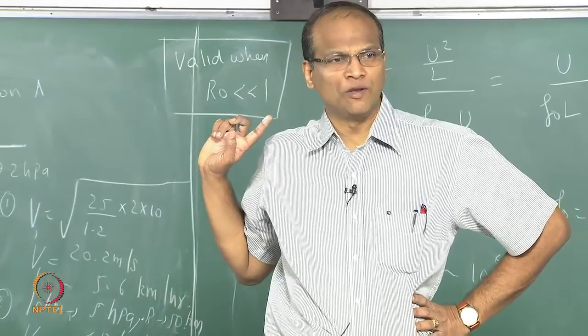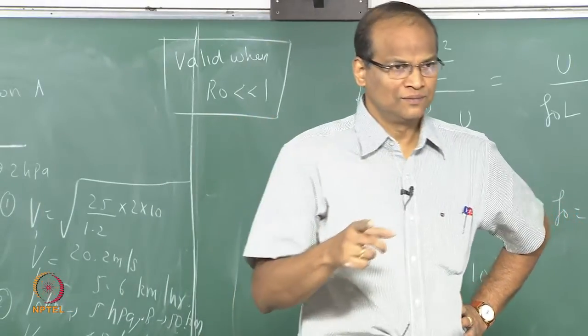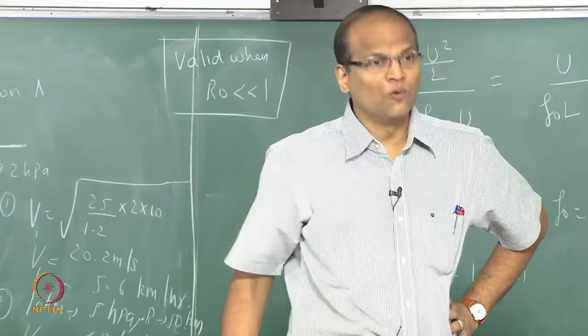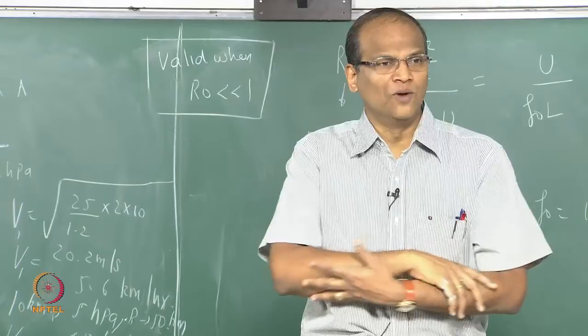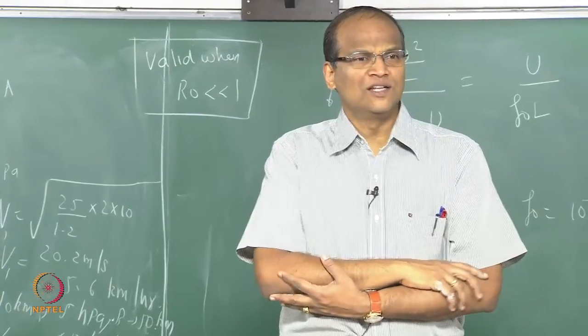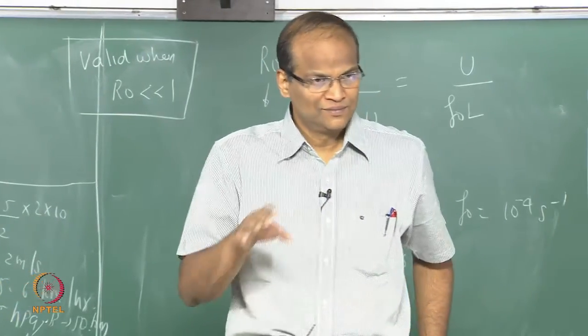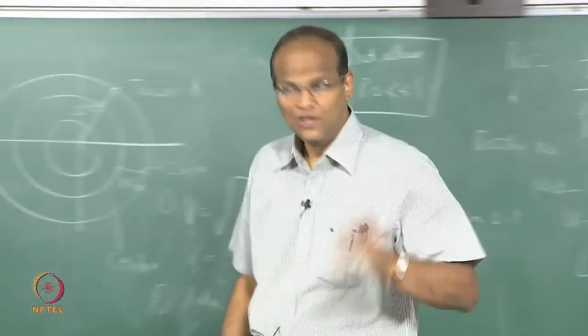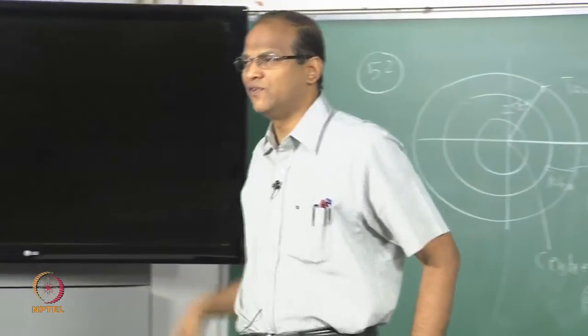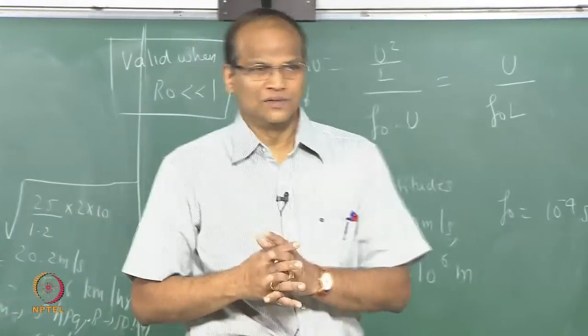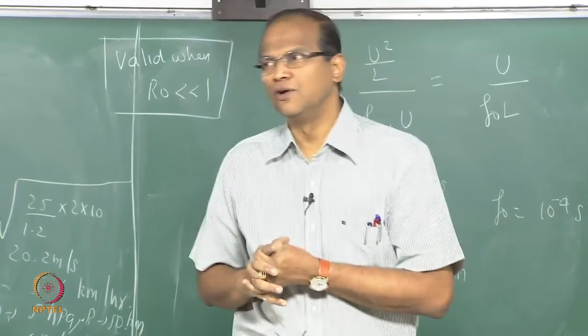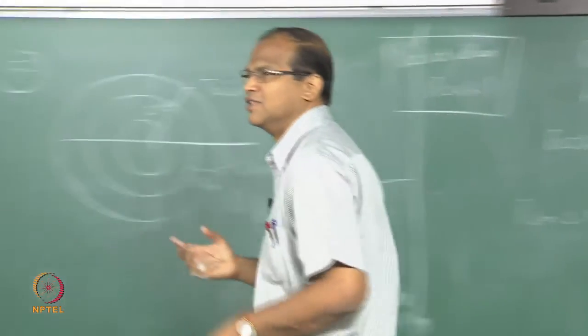I leave it as an exercise to you. If you use the geostrophic approximation, you will get an absurd answer. You have that, u equal to 1 by f rho into del p by del y. If you do that, take the del p by del y by del p by del n, use the Coriolis, you will get some silly answer. Because you are not supposed to use the geostrophic approximation for this. So that brings us to the end of the course.